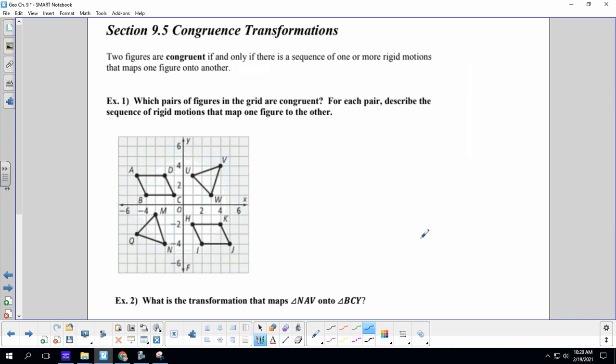Okay, 9-5, congruence transformation, two figures are congruent if and only if there is a sequence of one or more rigid motion that maps one figure on to the other. So, remember, rigid motions means it doesn't change the size or angles. So, we are going to look at shapes and determine if they are congruent.